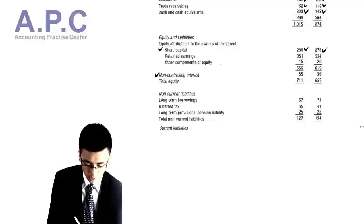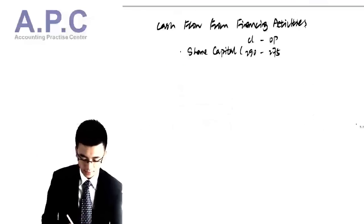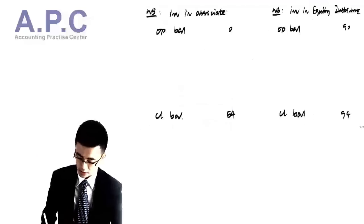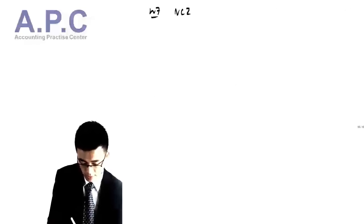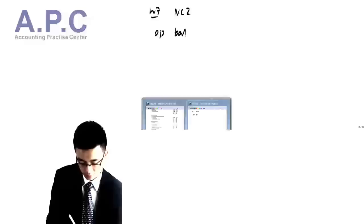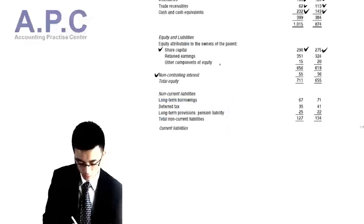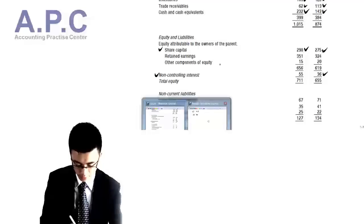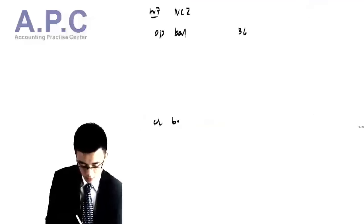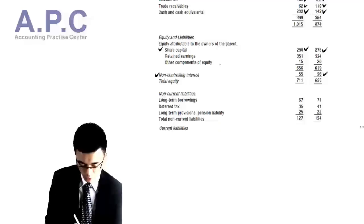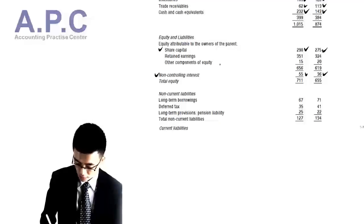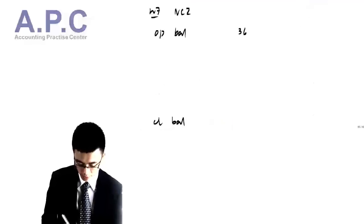For the NCI working — working number 7 — the opening balance from the question is 36, and the closing balance is 55.